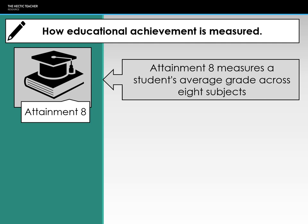One problem with this measure is that if students don't take eight GCSEs, the remaining gaps are scored as zero. For example, a student taking six GCSEs — say English, maths, double science, history, and a language — would still divide by 10, with the two empty slots counting as zero. This disadvantages students who take fewer GCSEs, as their Attainment 8 score will be lower as a result.